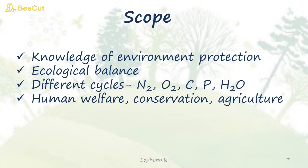What is the scope of ecology? Ecology provides us the knowledge of environment protection. It makes us understand the concept of ecological balance. When different cycles are studied in ecology — like the nitrogen cycle, oxygen cycle, carbon, phosphorus and even water cycle — ecology helps us study human welfare, conservation and agricultural methods.